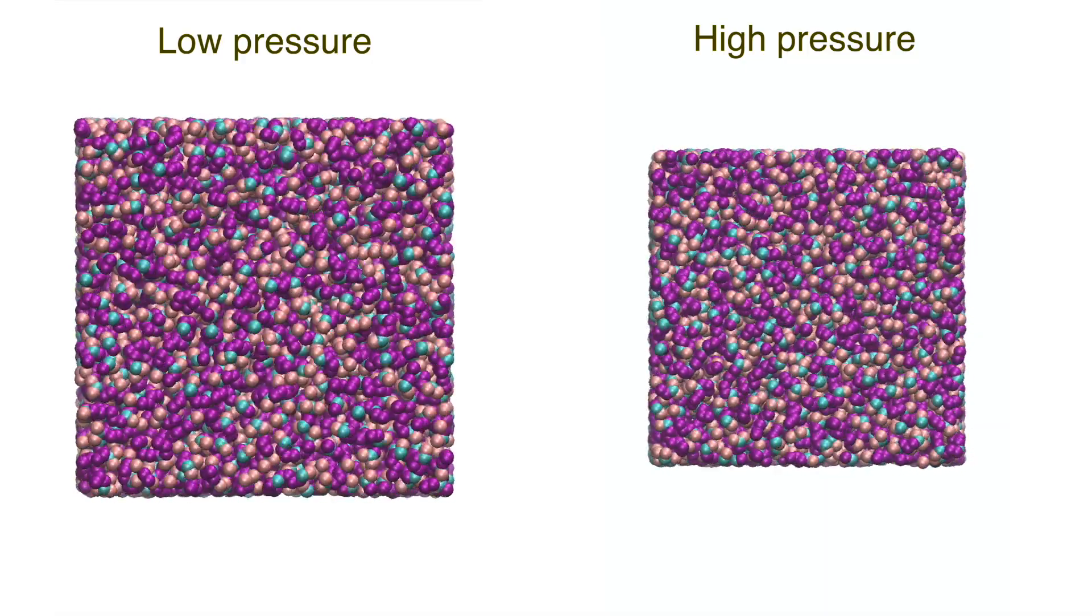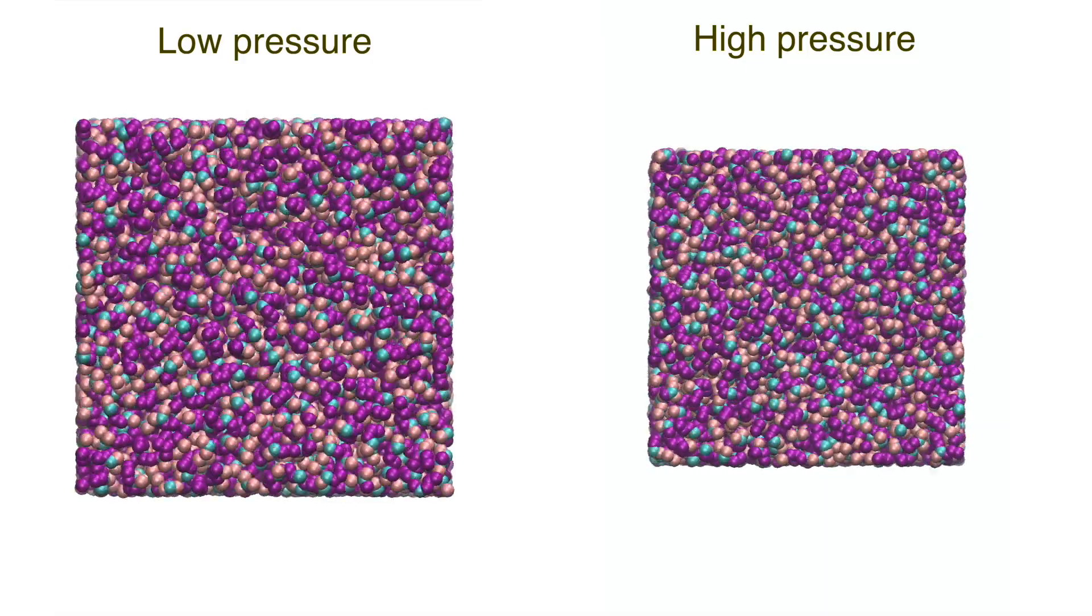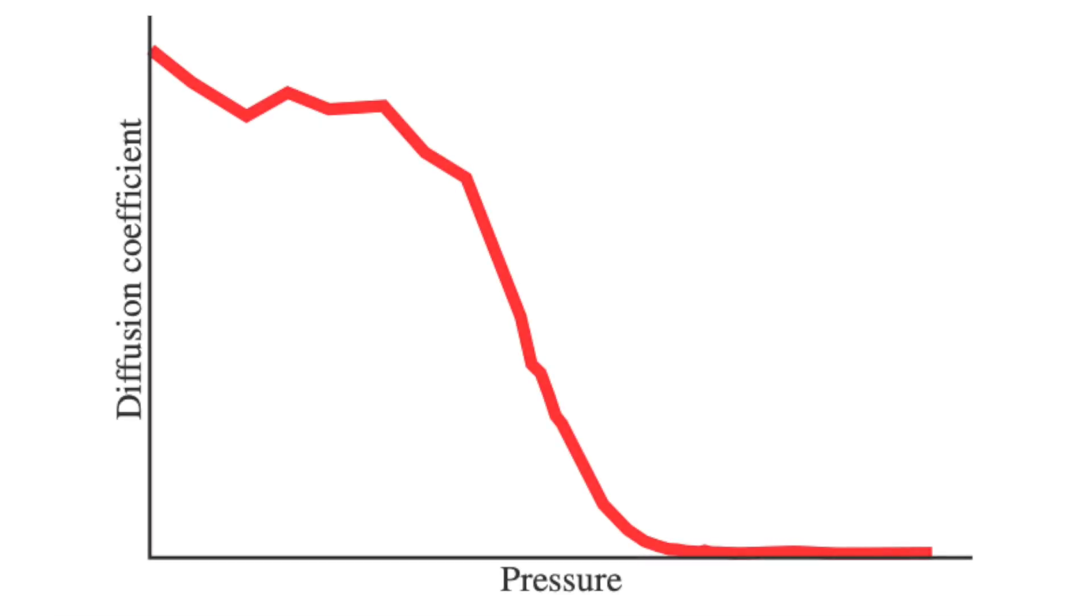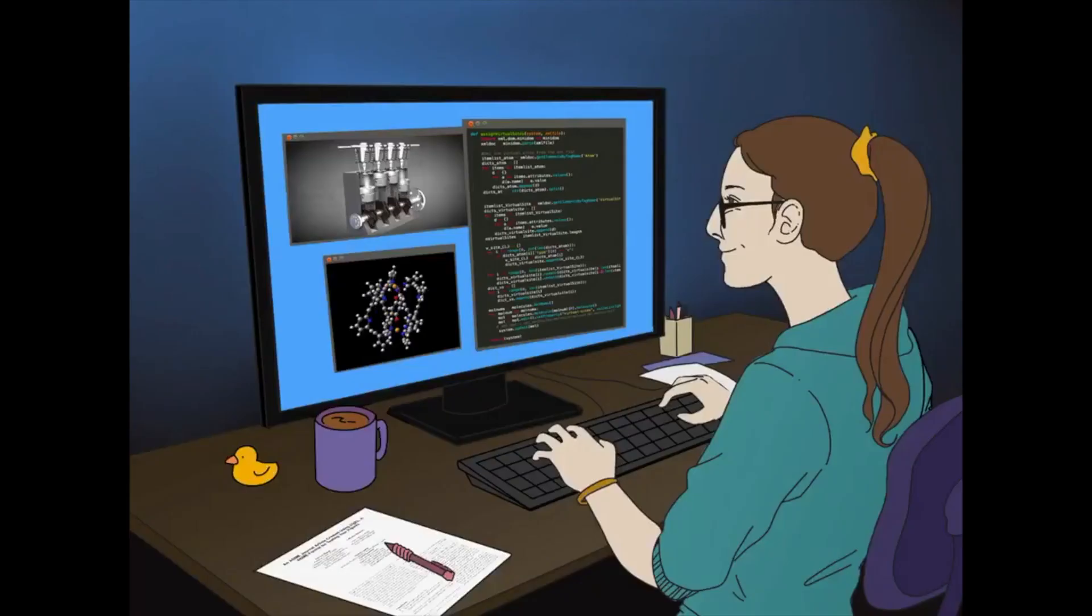We can measure how much the individual atoms are moving throughout the simulation. As we increase pressure, the diffusion drops rapidly and at high pressure we can see that nothing is really moving. This fits very well with the idea that solidification is taking place. We can also measure other properties with these simulations.